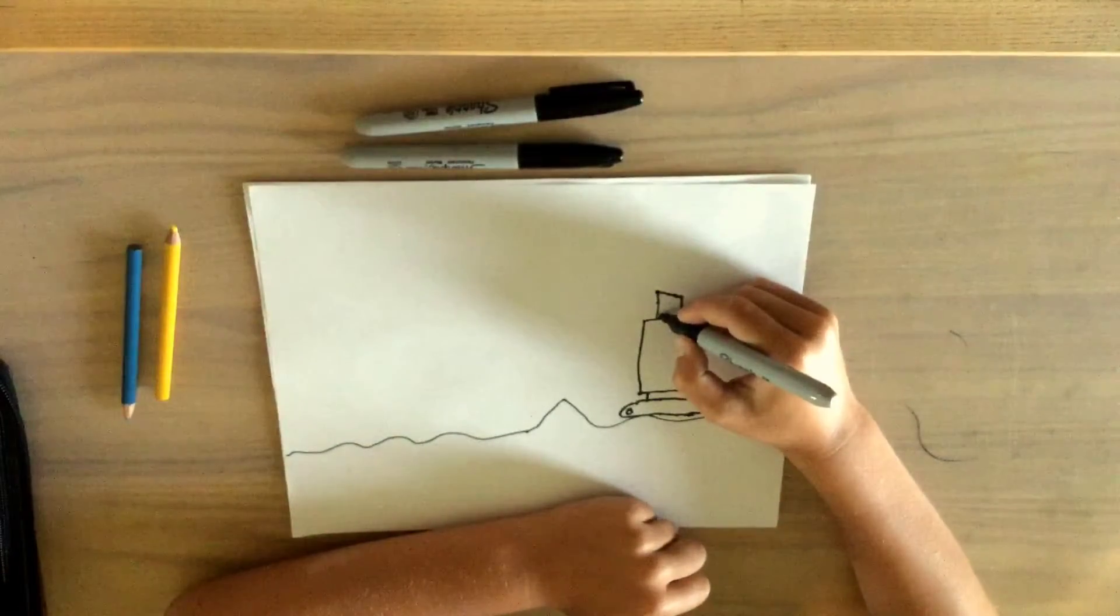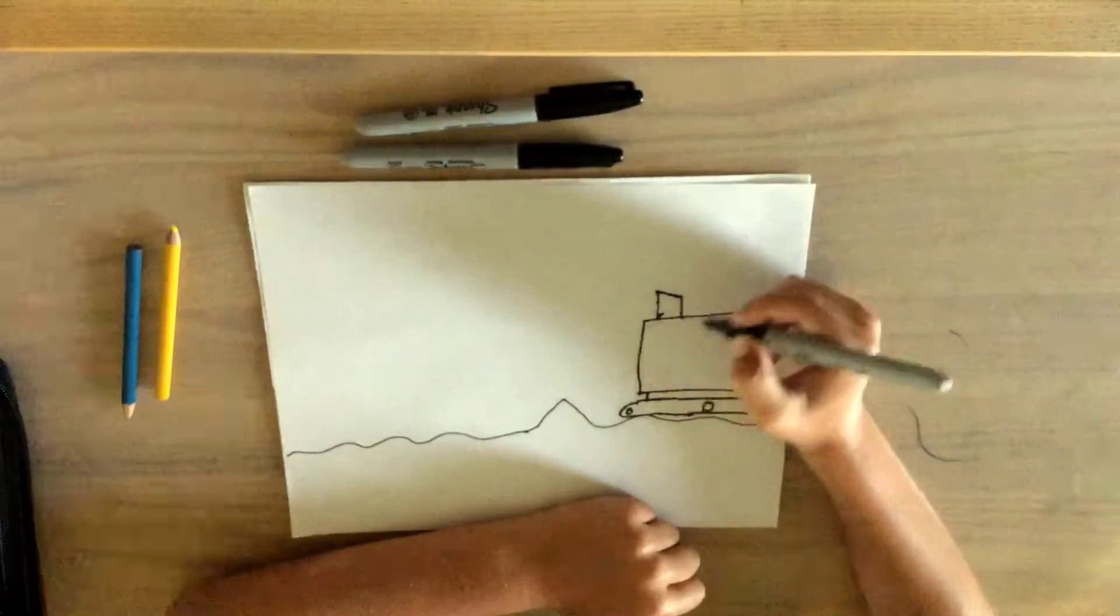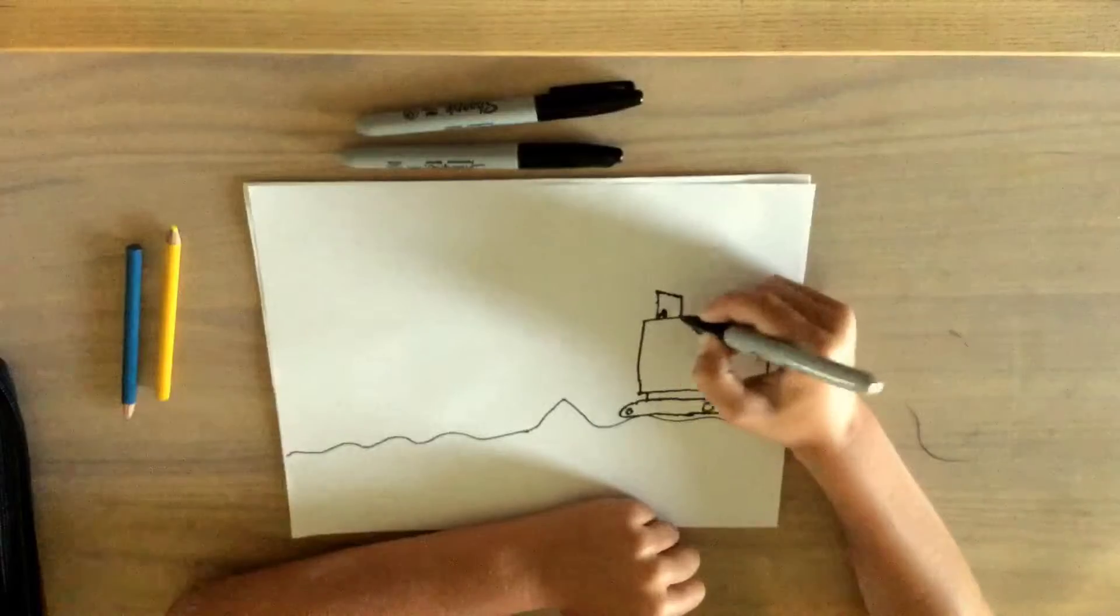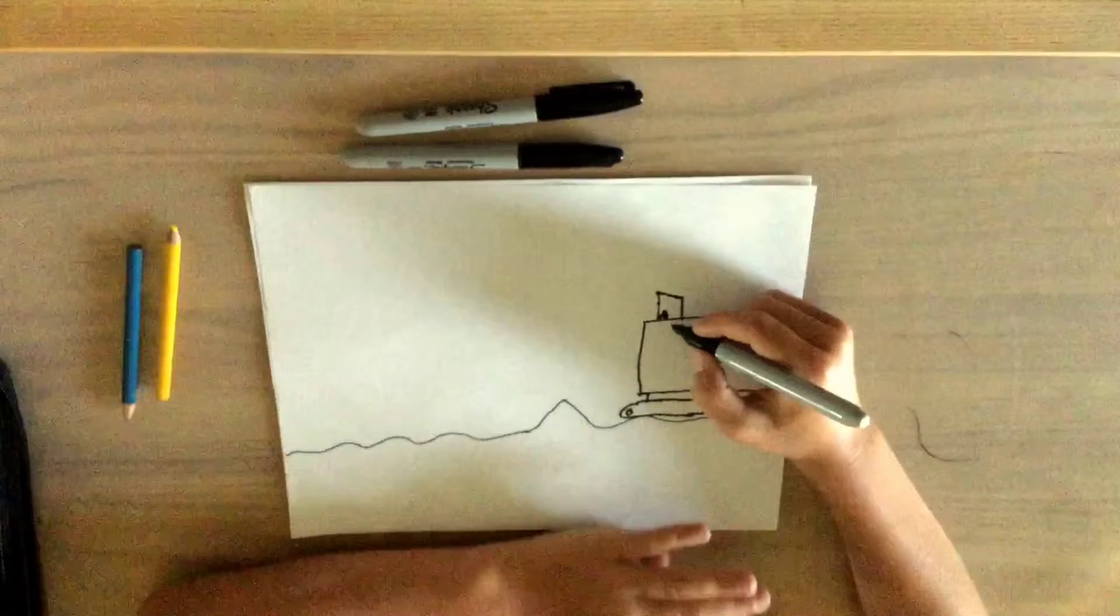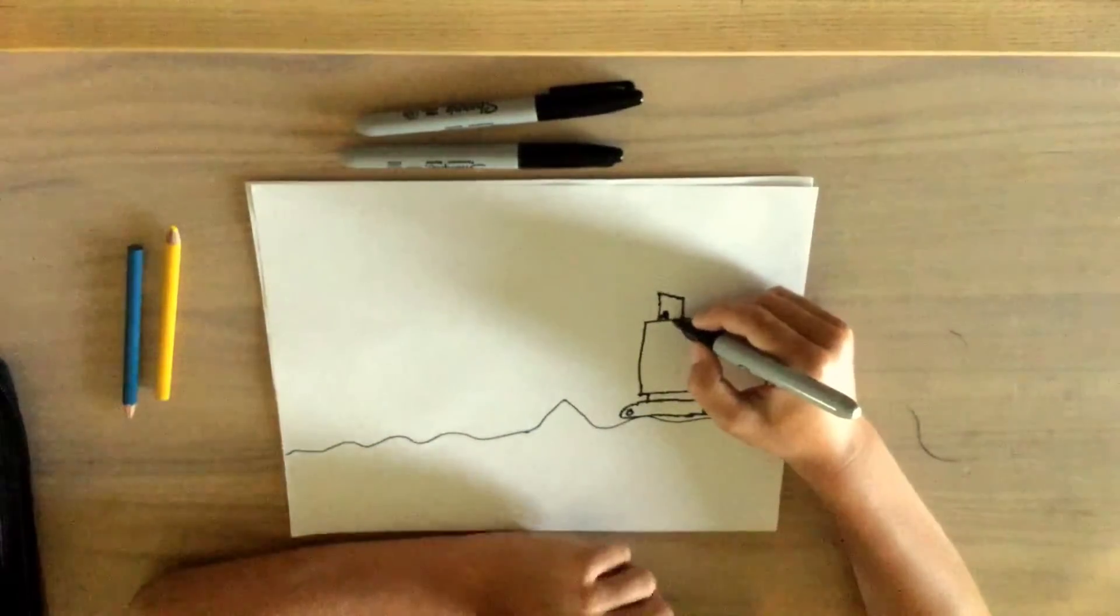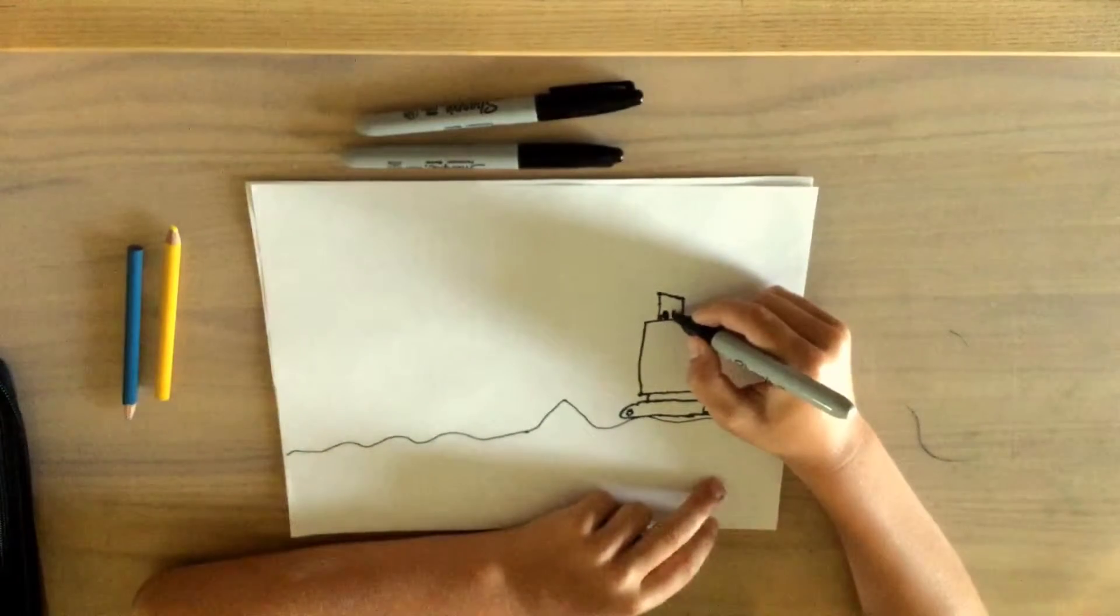Now I'm going to draw a line up, over, and I'm just going to draw a circle right there. That is our steering wheel, even though I'm not sure if they have steering wheels or not. Now we're going to draw a person.